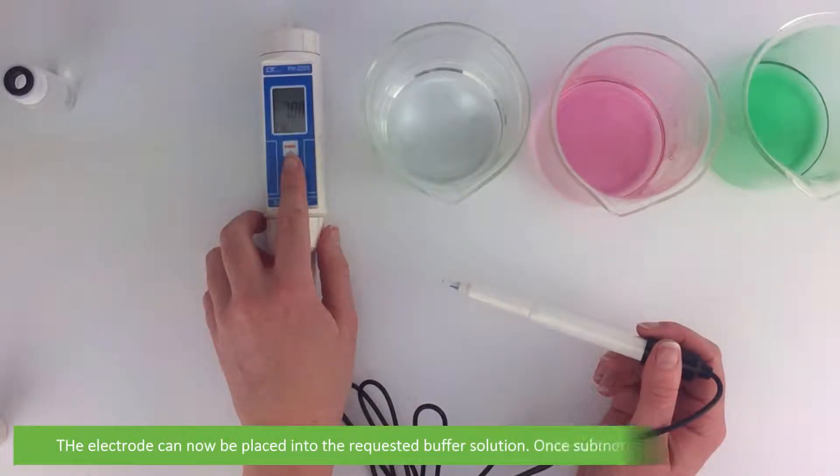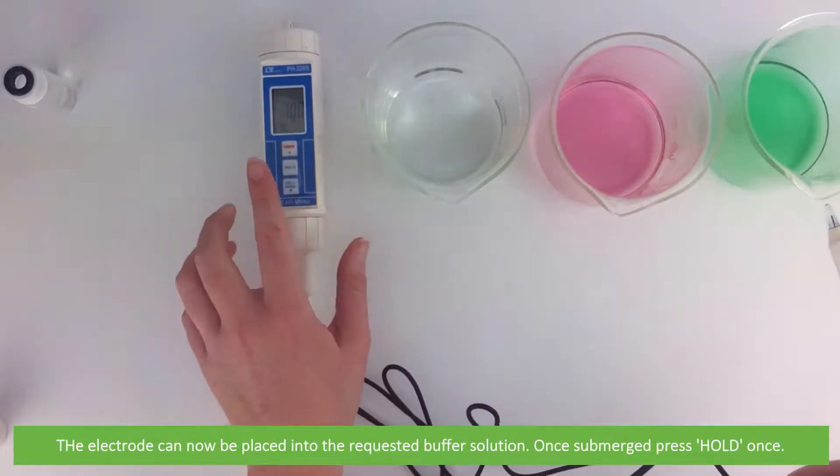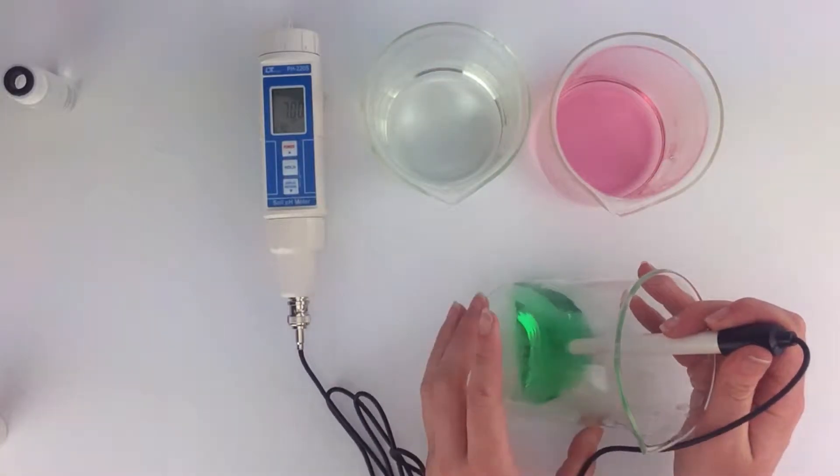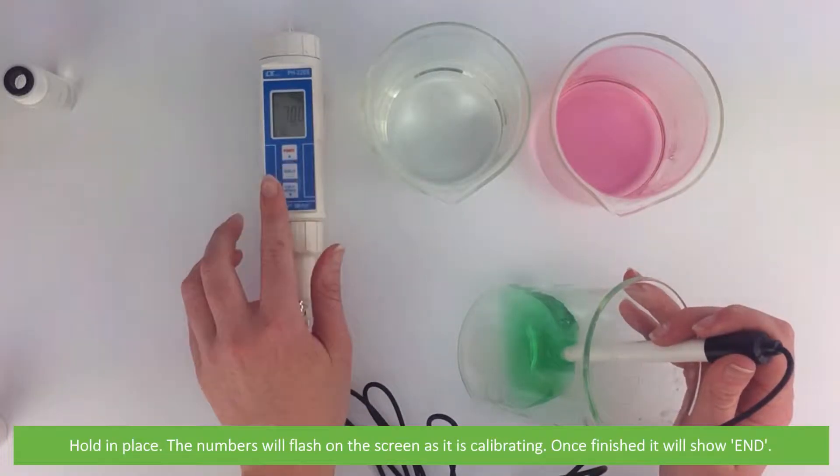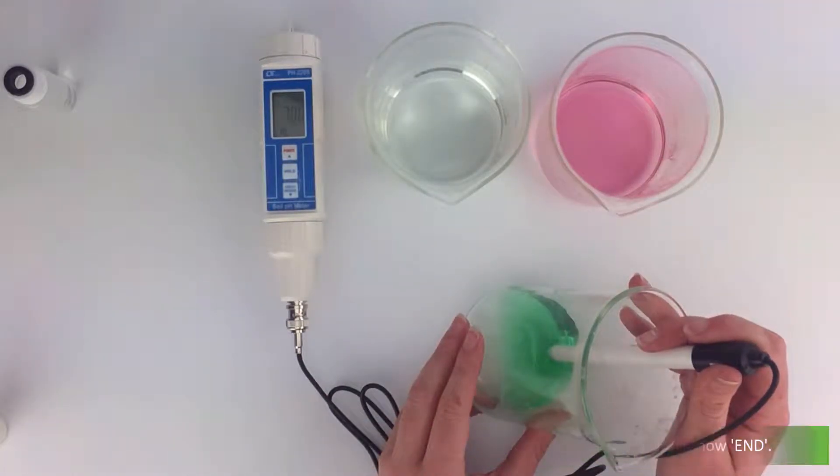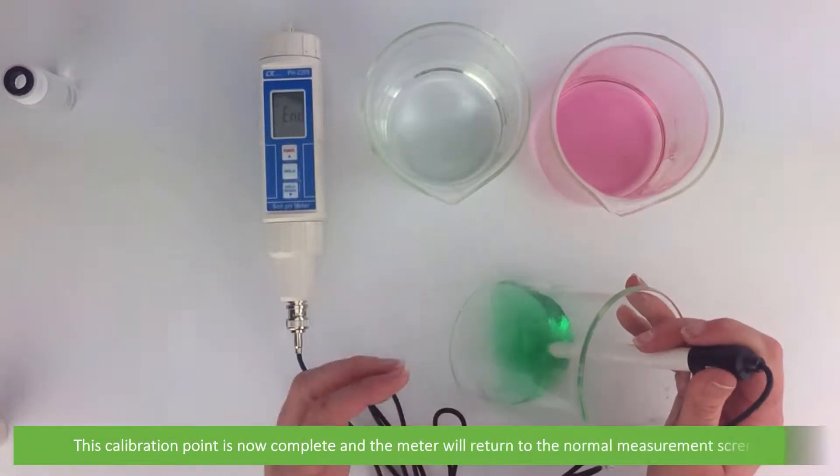The electrode can now be placed into the requested buffer solution. Once submerged, press hold once and hold in place. The numbers will flash on the screen as it is calibrating. Once finished, the screen will show END.